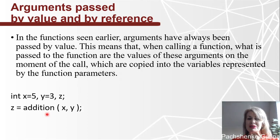In the functions seen earlier, arguments have always been passed by value. This means that when calling a function, what is passed to the function are the values of these arguments on the moment of the call, which are copied into the variables represented by the function's parameters. Like here in this example, we call our function addition using arguments x and y. And there is a function.